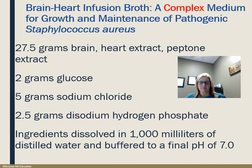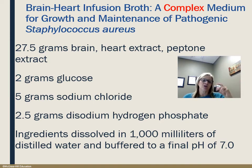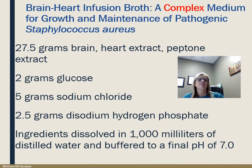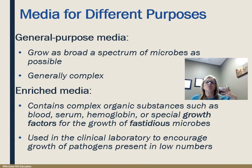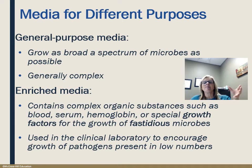Here's an example of a complex media — it has parameters but they're not nearly as specific. It doesn't require specific amounts of specific amino acids; it says about 27.5 grams of brain and heart extract, some peptone, some sugar, some sodium chloride, but it's not extremely specific about exact measurements. General purpose media allows the growth of a broad range of microbes and is usually complex media — things like nutrient agar, nutrient broth, brain heart infusion, and tryptic soy agar.